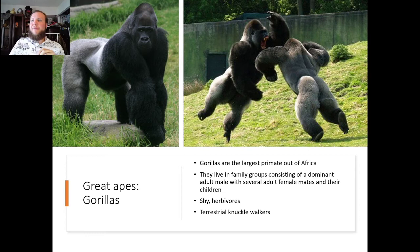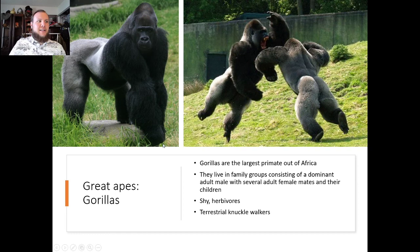Gorillas are the largest apes. They live in family groups consisting of a dominant adult male and several adult females and their children — a polygynous social structure. They're shy and herbivores, and they're terrestrial knuckle walkers. You can see this individual walking on his knuckles — they locomote primarily on the ground that way.